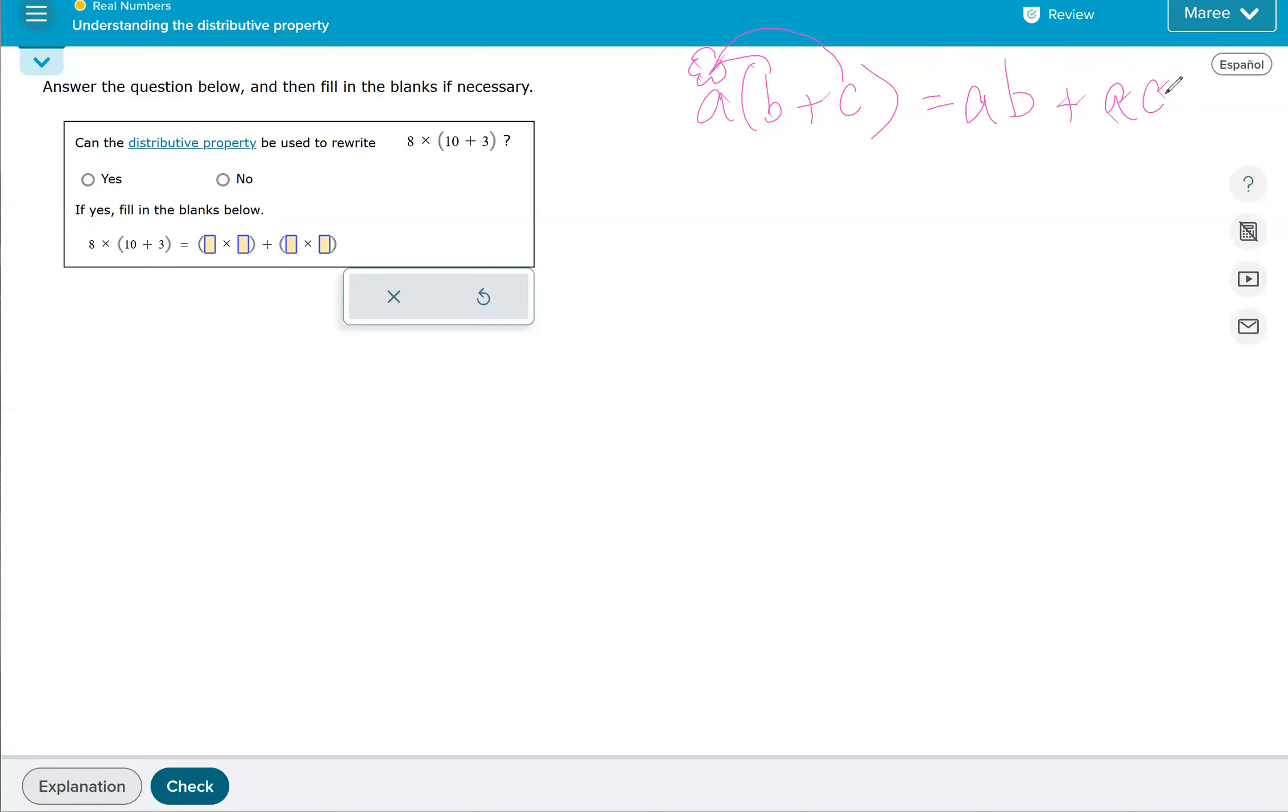In our first example, the problem says: can the distributive property be used to rewrite 8 times (10 + 3)? It can. The answer would be yes, because there's 8 being times by something in parentheses. So yeah, that can happen. Then to fill in the blanks, this first number will always be what's outside the parentheses.